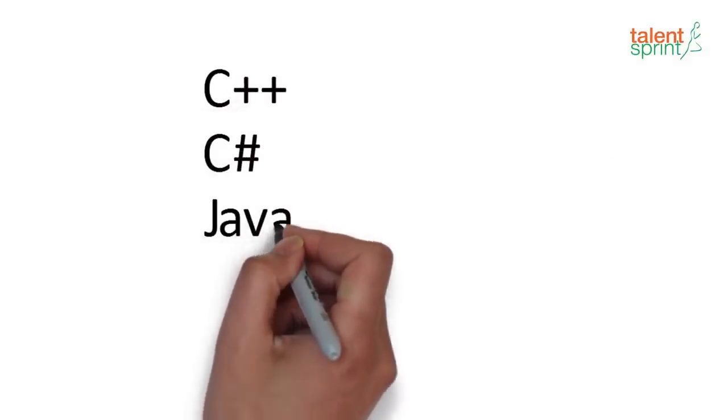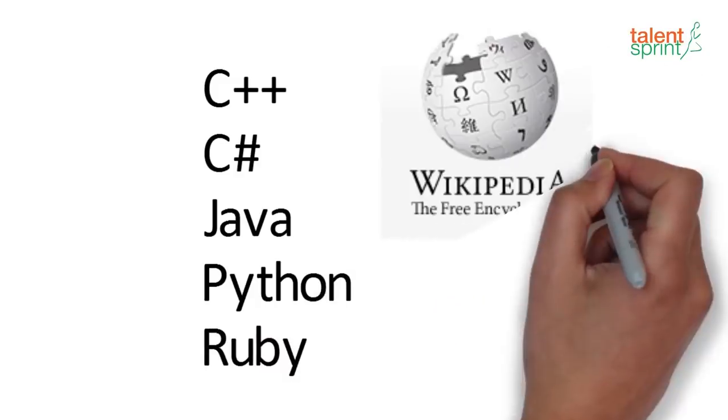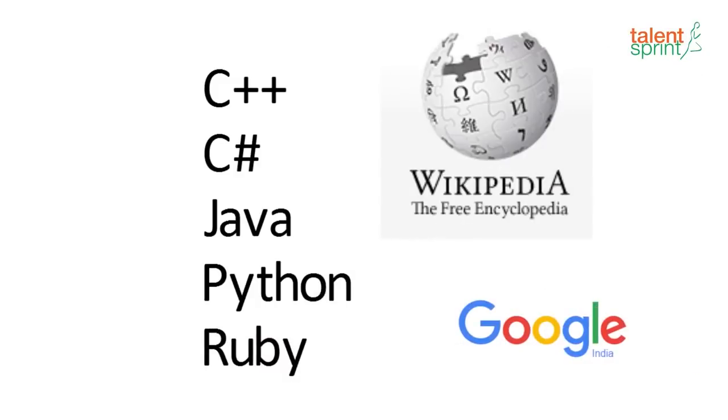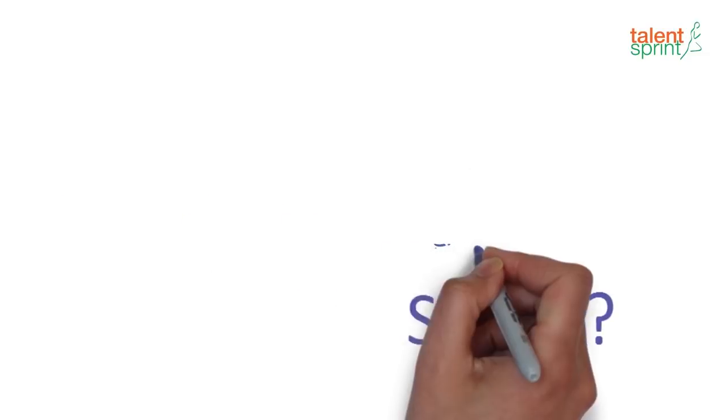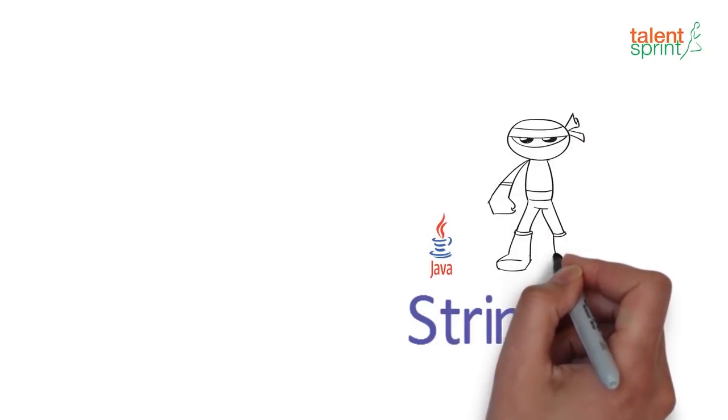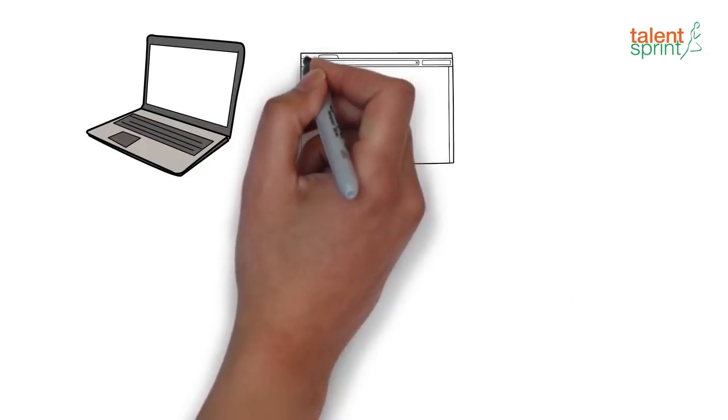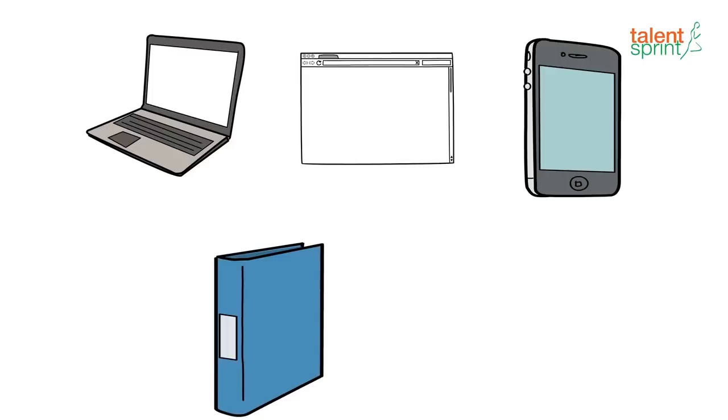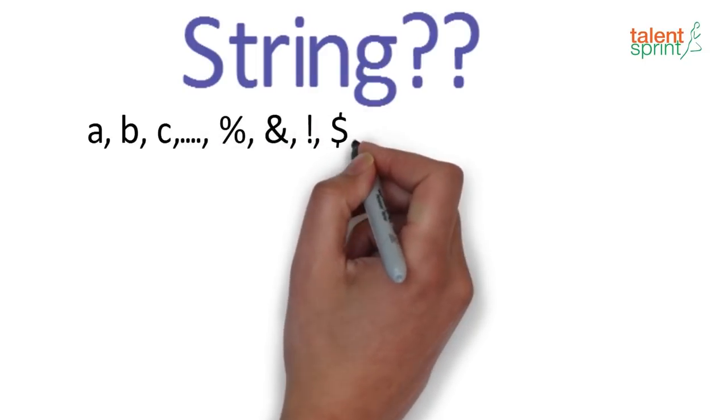Now you might have used strings before while using other programming languages or read about what a string is. So let's first start off with understanding what a string is with reference to Java. In Java a string is a powerful concept because everything is treated as a string. If you submit any form in window based, web based or mobile application or if you read data from a file or console, all these inputs are taken as a string. A string simply put is a sequence of alphanumeric characters.